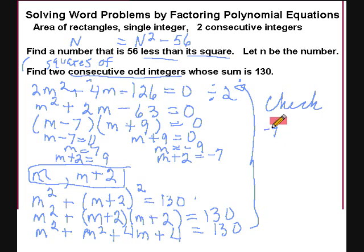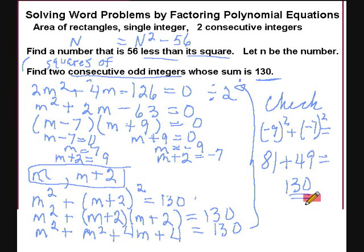So if I square these numbers, do I get 130? 9 squared is 81. Negative 9 squared is also 81. 7 squared or negative 7 squared is 49. If I add that, I do get 130. So our answers are correct. There they are. m equals negative 9. And our two numbers are negative 9 and negative 7, or positive 7 and positive 9.